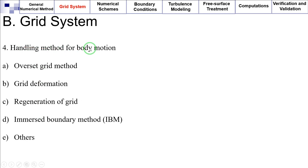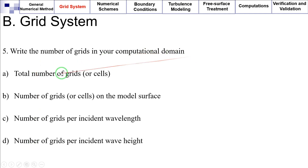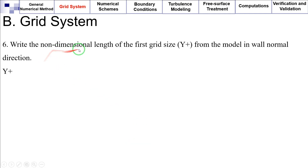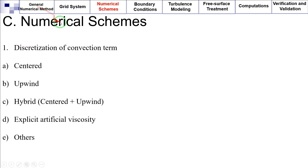Also, if the body you're investigating has motions, how are these motions handled — by using an overset grid method, grid deformation, regeneration of grid, immersed boundary method (IBM), or others? You need to write the number of grids in your computational domain in the following order: total number of grids or cells, number of grids or cells on the model surface, and if your simulations involve wave propagation modeling on the free surface, number of grids per incident wavelength and number of grids per incident wave height. Additionally, write the non-dimensional length of the first grid size y+ from the model in the wall-normal direction.